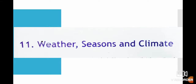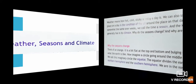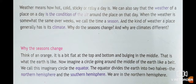We already discussed this lesson in social about weather and climate. Let us also learn more about it in this video. Weather means how hot, cold, sticky or rainy a day is. We can also say that the weather of a place on a day is a condition of the air around the place on that day. When the weather is somewhat the same over weeks, we call the time a season. And the kind of weather a place generally has is its climate.